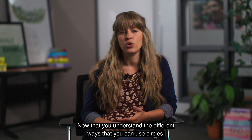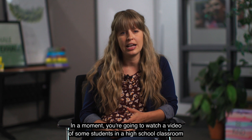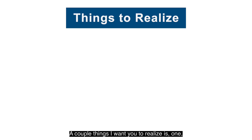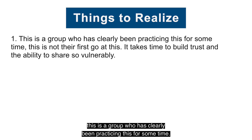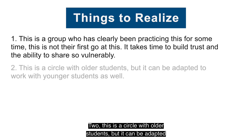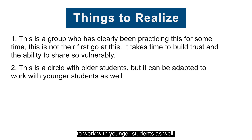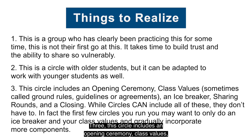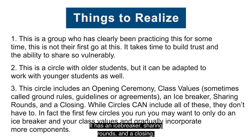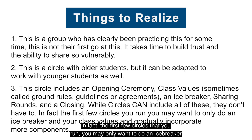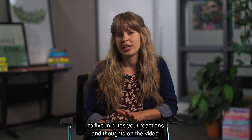Now let's take a closer look at a community building circle. You're going to watch a video of students in a high school classroom in Oakland leading a community building circle. A couple things to note: this group has clearly been practicing for some time — it takes time to build trust and the ability to share vulnerably. This circle can be adapted for younger students. It includes an opening ceremony, class values, an icebreaker, sharing rounds, and a closing — but circles don't have to include all of these. Your first few circles may only include an icebreaker and class values, gradually incorporating more. After the video, stop and discuss your reactions and thoughts for three to five minutes.